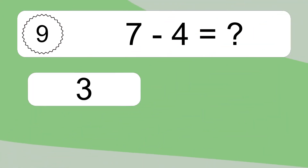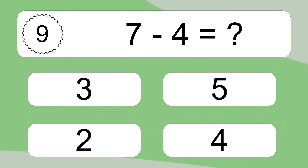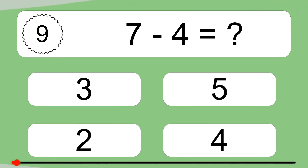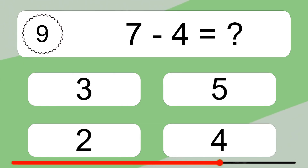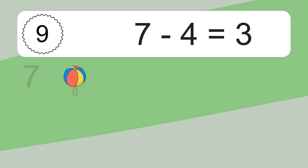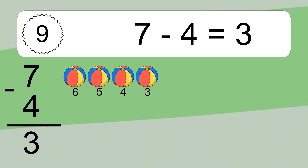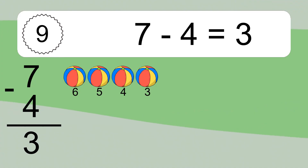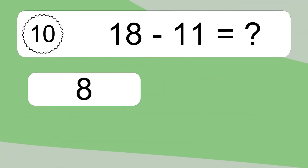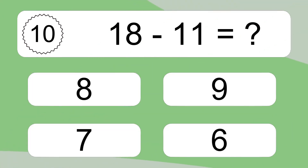7 minus 4 equals what? Let's count it: 6, 5, 4, 3. 18 minus 11 equals what?